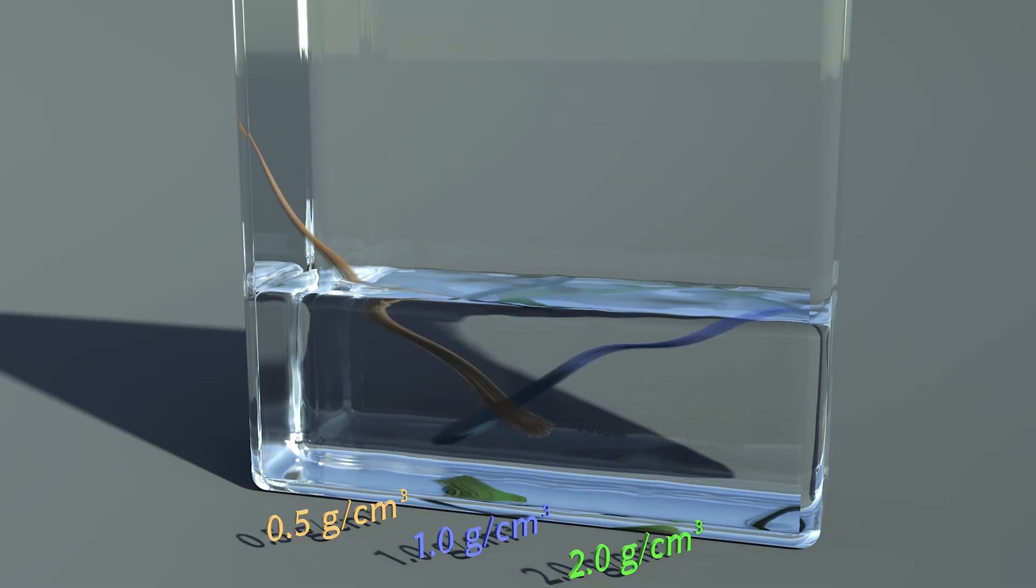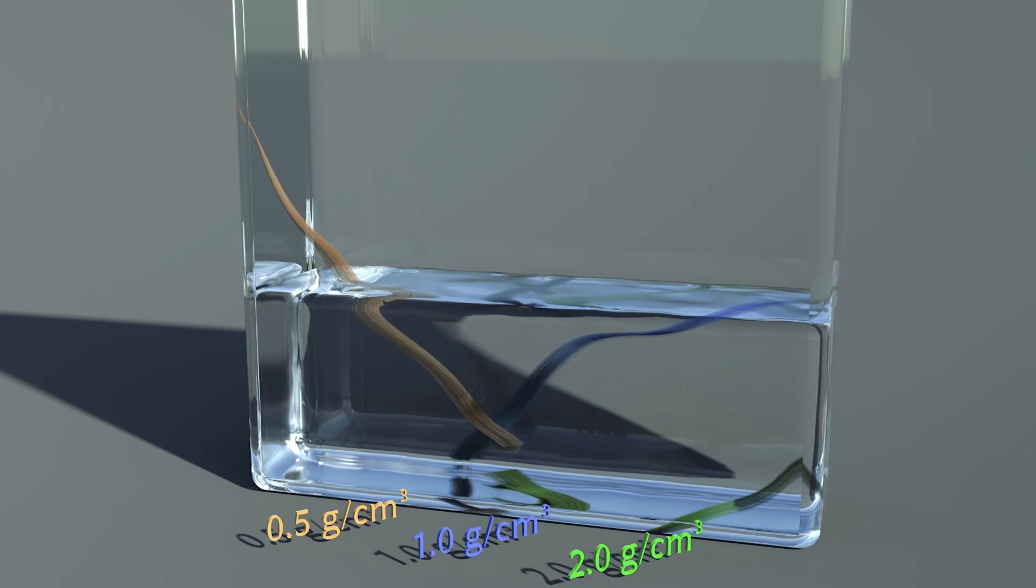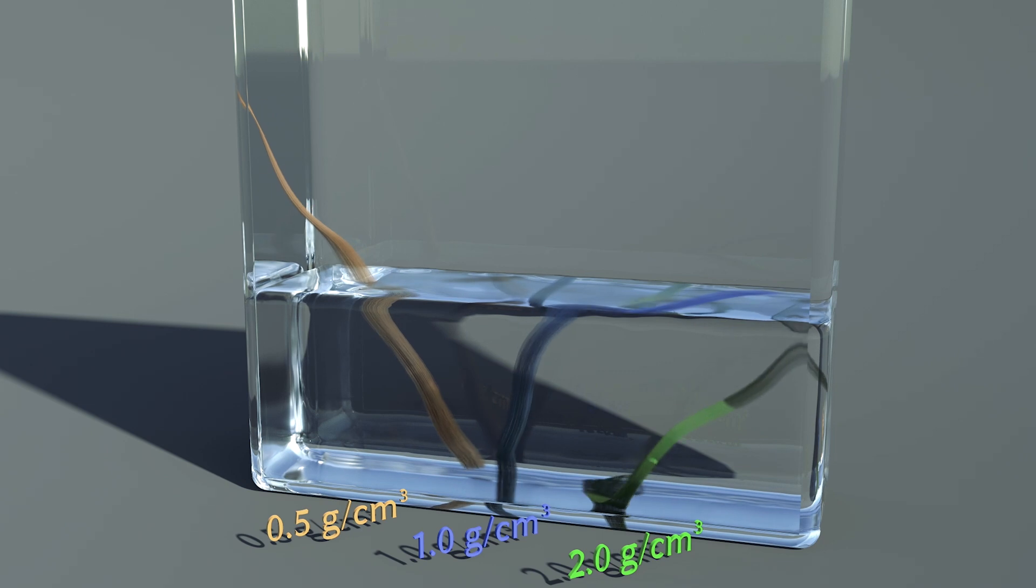With the pressure gradient computed using our method, we can correctly handle the buoyancy of hairs in water, where the lighter brown hairs float, the neutrally buoyant blue hairs drift, and the heavier green hairs sink.